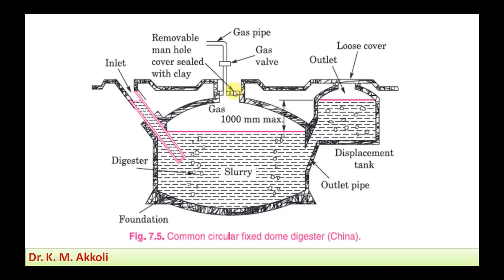The produced gas is stored in the dome and an arrangement is made to tap it. A removable manhole cover sealed with clay is provided to allow maintenance work for any difficulties such as leakage or removal of the slurry. A pipe is connected to tap the gas through a gas valve, which supplies gas via a gas tube for domestic cooking or water heating purposes.